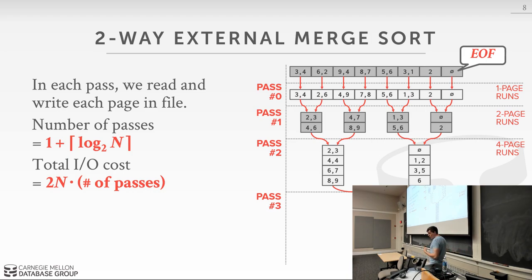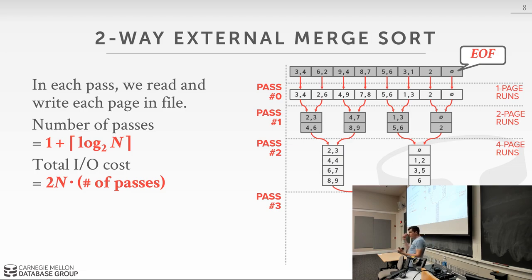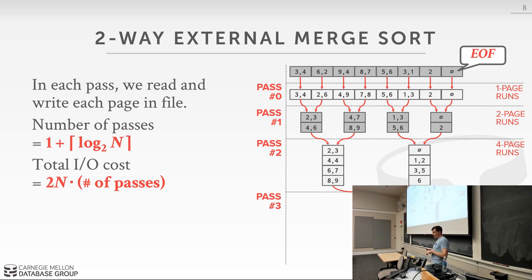For the two-way merge sort, the number of passes is 1 plus the ceiling of log base 2 of N. The total IO cost — the number of pages we have to read and write — is 2N times the number of passes. For each pass, every page must be read in and written out, hence the factor of 2N: the first N is for the read, the second N is for the write.